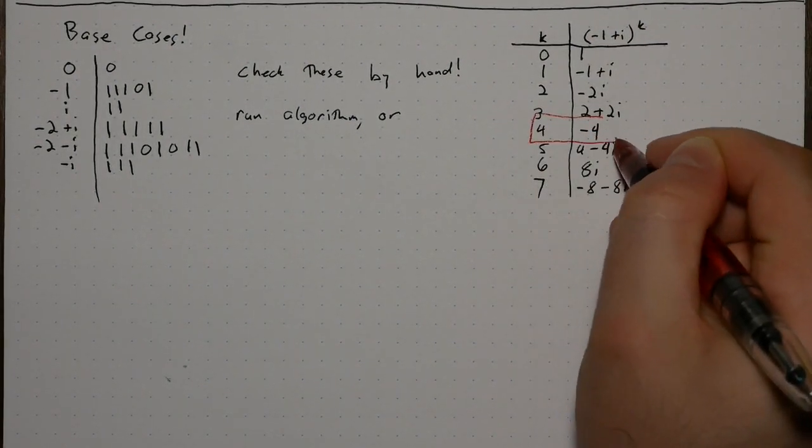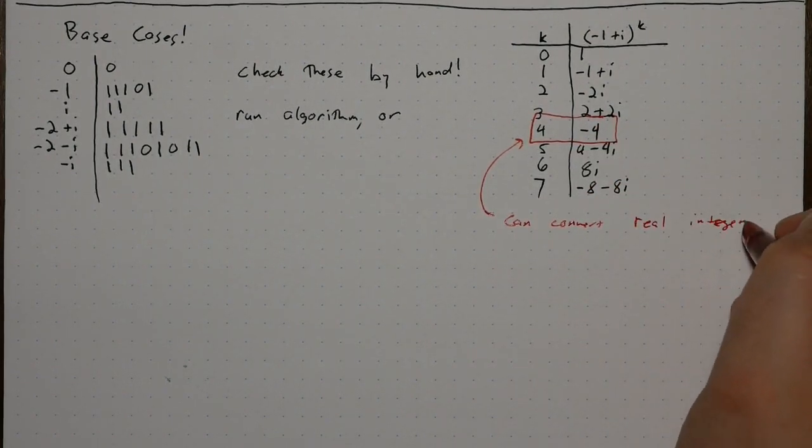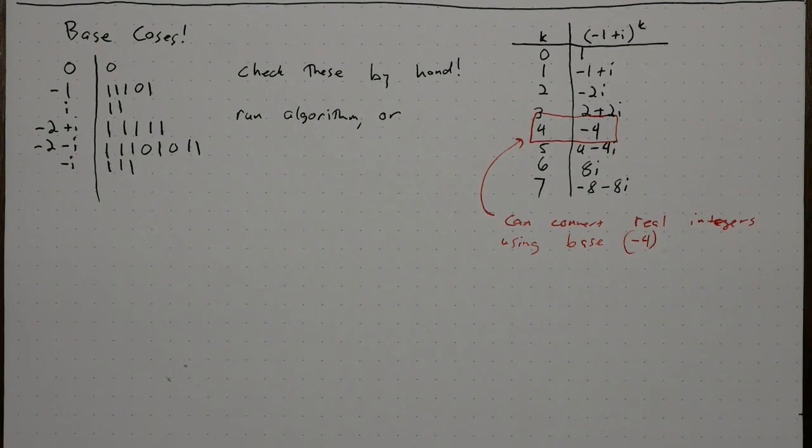By the way, see how negative 1 plus i to the fourth is negative 4? That's how Penny converted the real integers. He went through base negative 4.